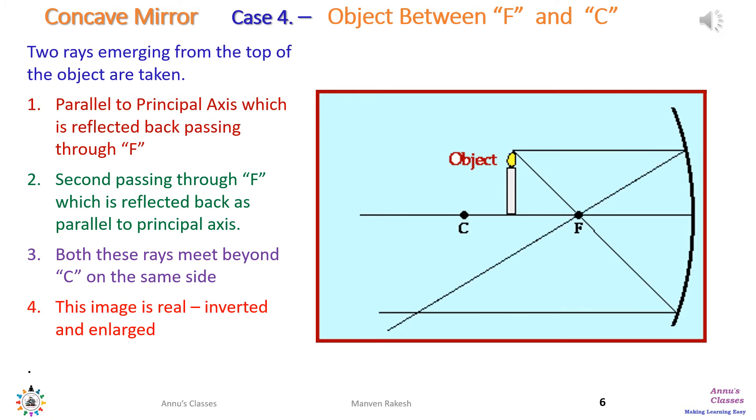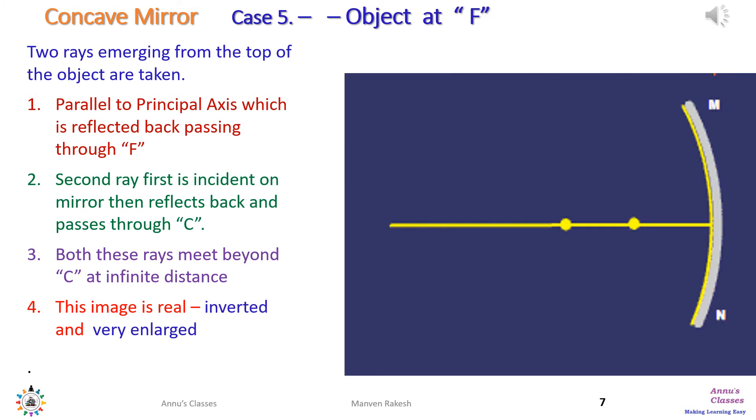In the fourth case, the object is placed between C and F. Two rays emerging from the top of the object: one parallel to the principal axis which after reflection passes through F; second first passes through F then reflects back. Both these rays meet beyond C and as shown in the figure, the image is enlarged, real and inverted.